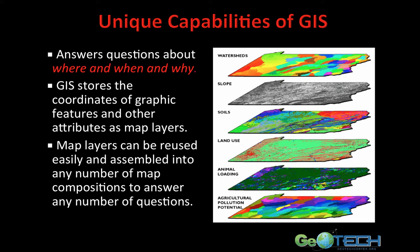When we're talking about GIS, we're no longer talking about a static map but rather a dynamic map. GIS has really unique capabilities — we're able to answer questions about where, when, and why. GIS stores the coordinates of graphic features and attributes as map layers, which can be reused and assembled into any number of map compositions. In one example, we have layers of watershed, slope, soil, land use, and animal loading, and we combine them to come up with a solution for agricultural pollution potential.